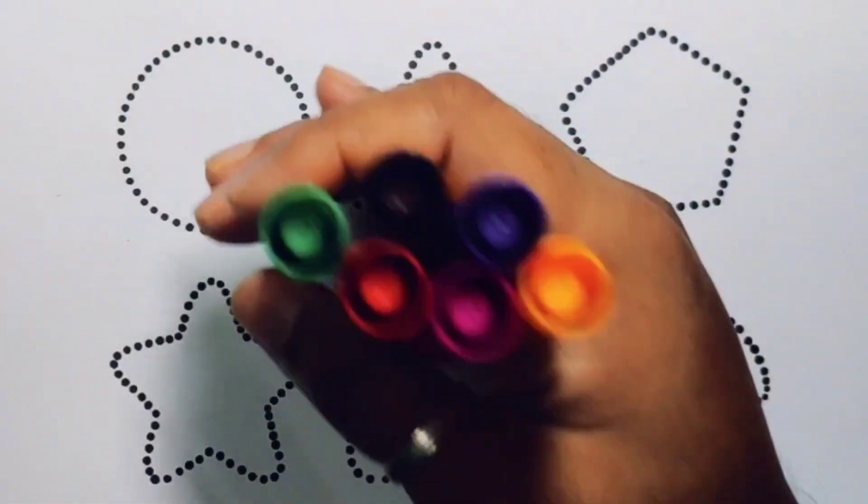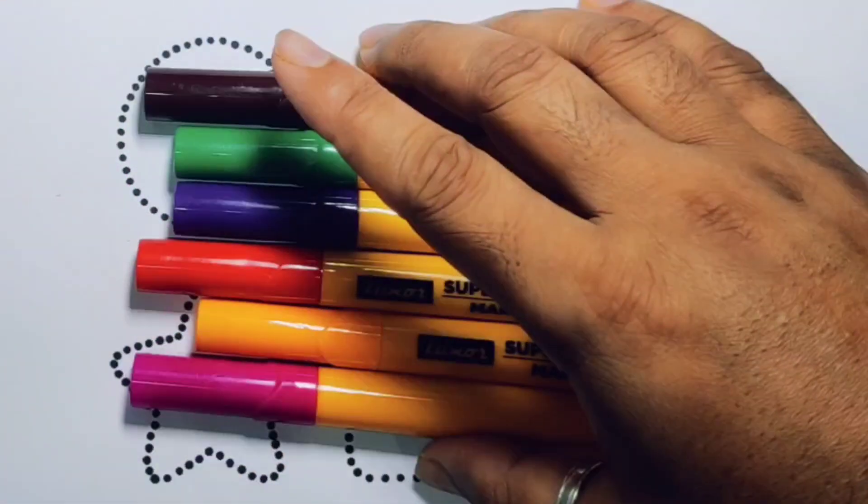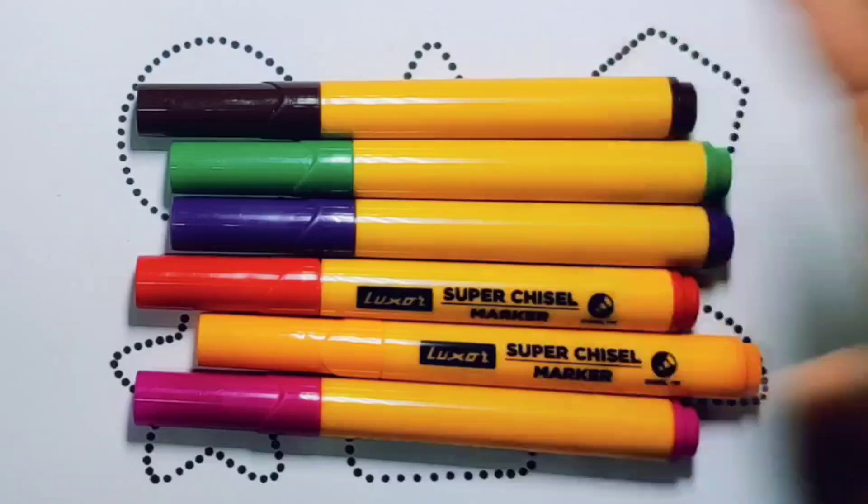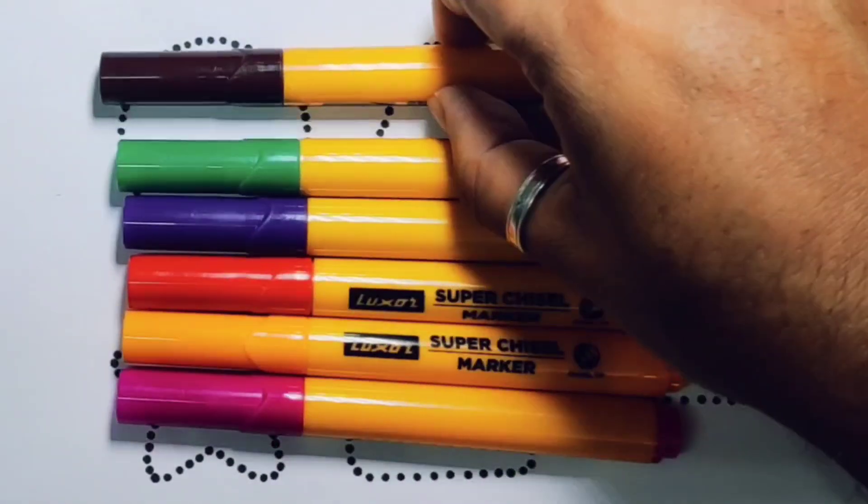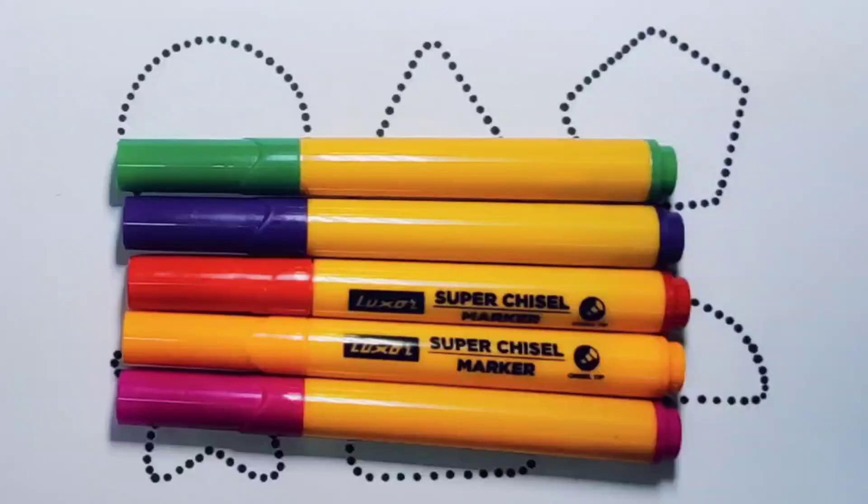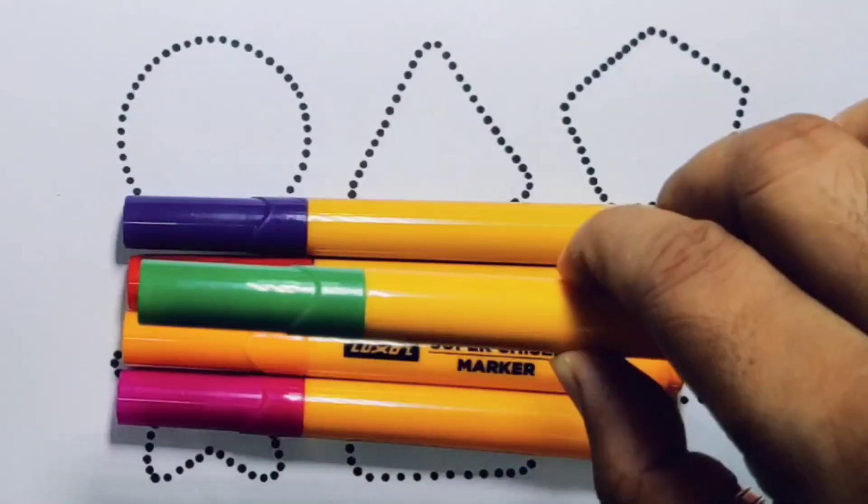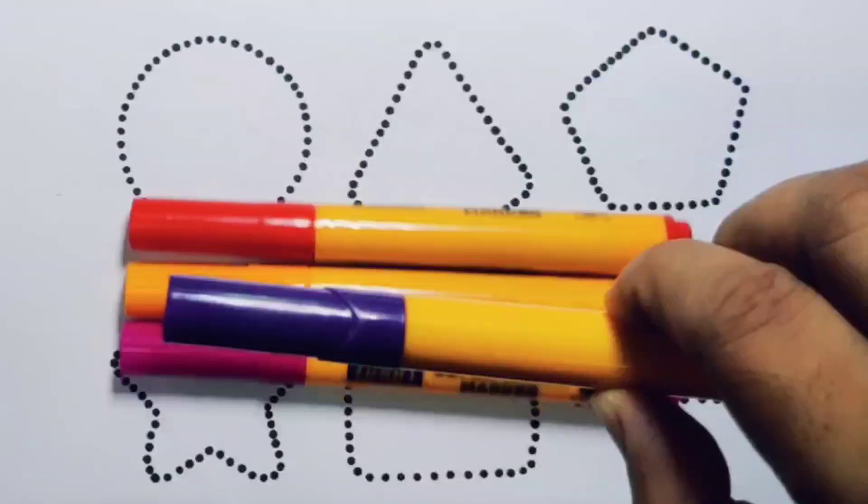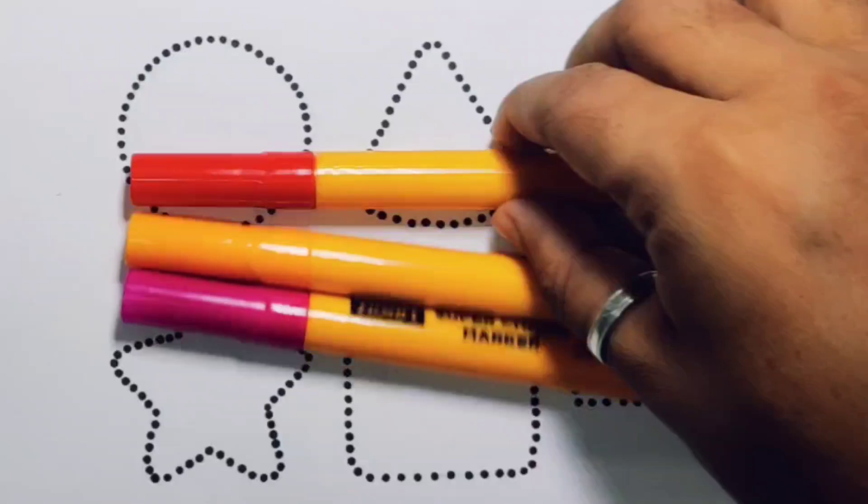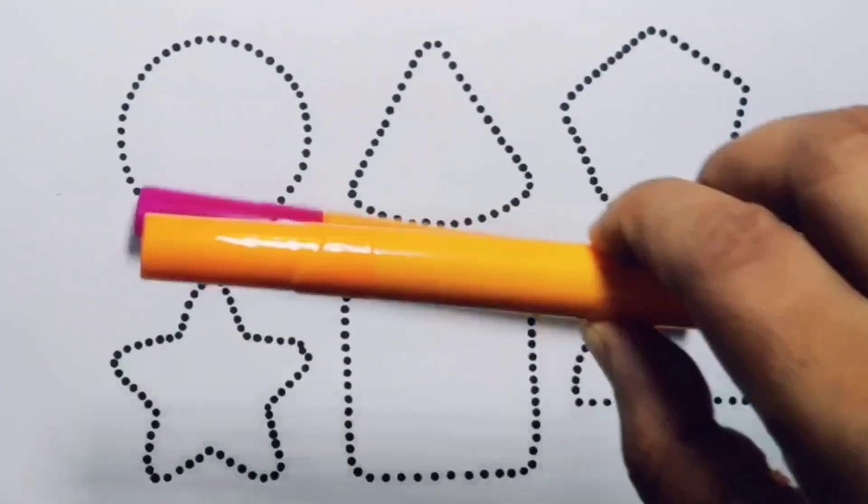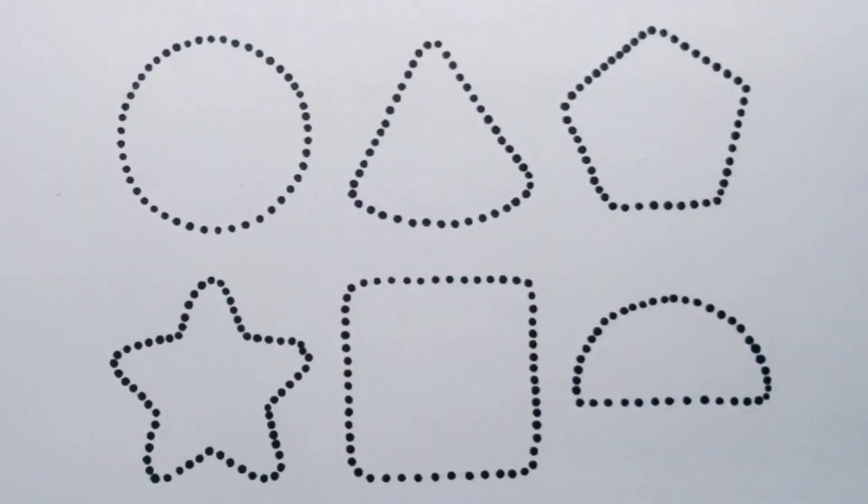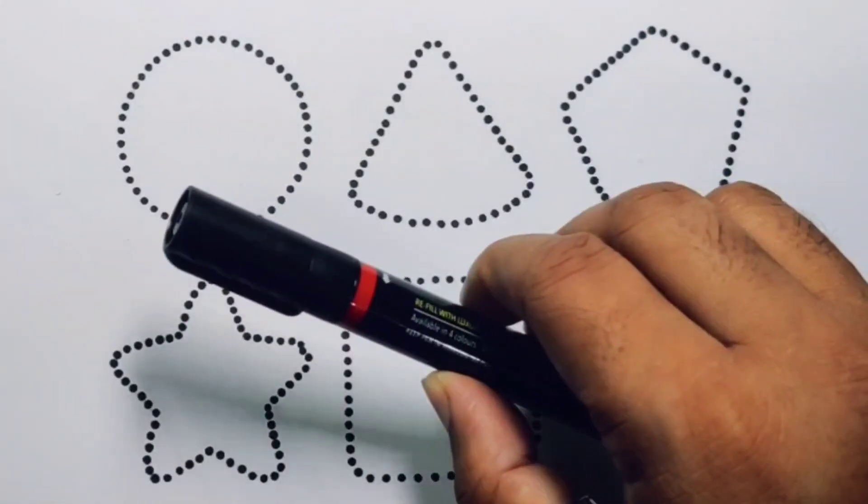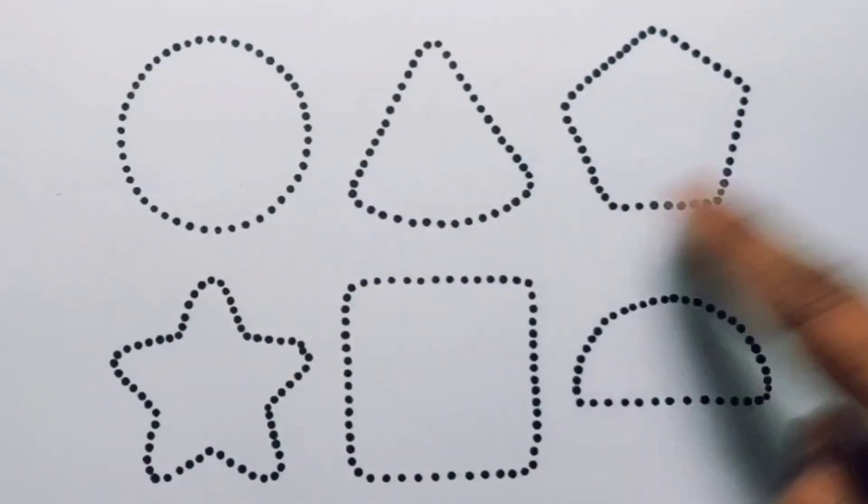Hello kids, welcome to my new video. First we're going to know the color names: chocolate color, green color, purple color, red color, orange color, pink color, black color. Now let's learn the 2D shapes.